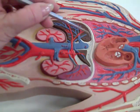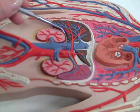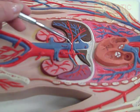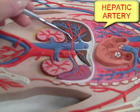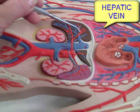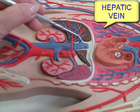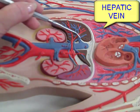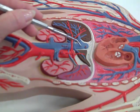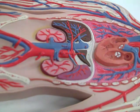This structure here, the brown structure, represents the liver. So we have the hepatic artery going to the liver, and the hepatic vein coming back from the liver, once again connecting to the inferior vena cava.